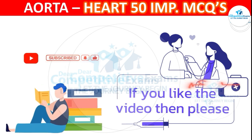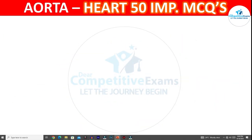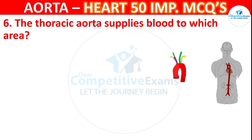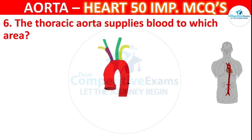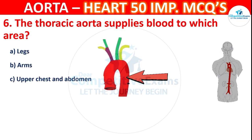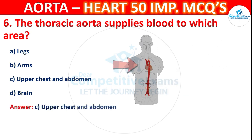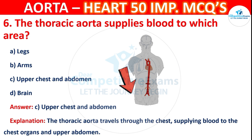Question number 6: The thoracic aorta supplies blood to which area? Options are legs, arms, upper chest and abdomen, or brain. The correct answer is C — upper chest and abdomen. The thoracic aorta travels through the chest, supplying blood to the chest organs and upper abdomen.